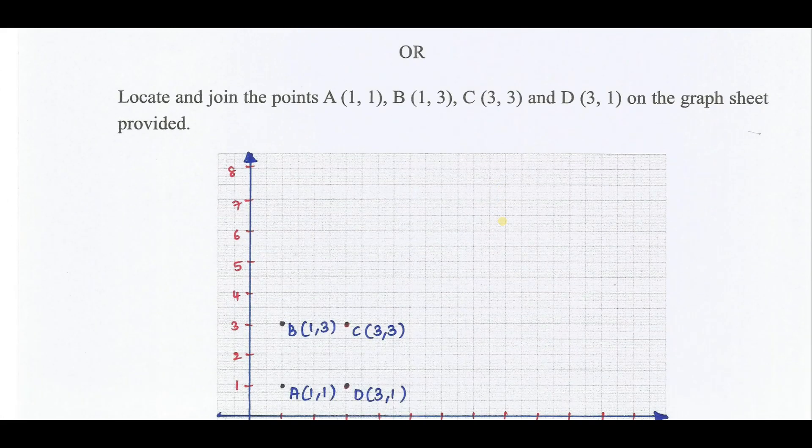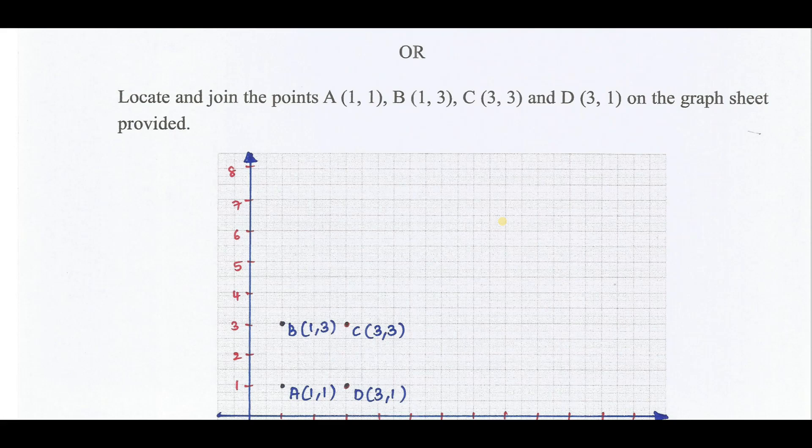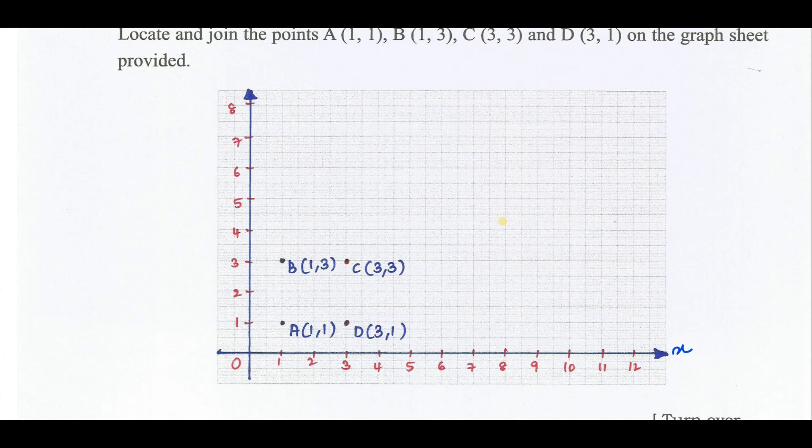Locate and join the points A, B, C and D. On the x-axis and y-axis, what we get is: A is (1,1), B is (1,3), then C and D.